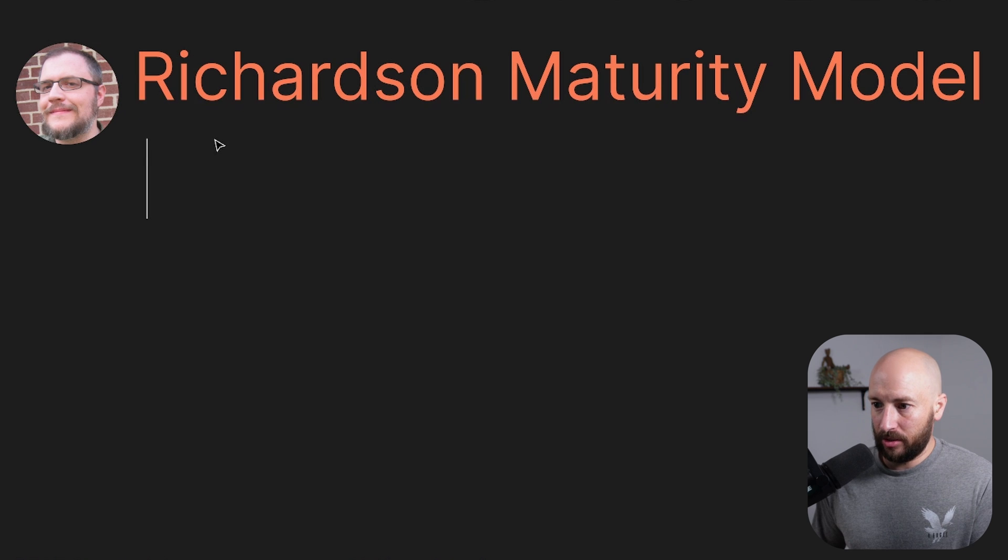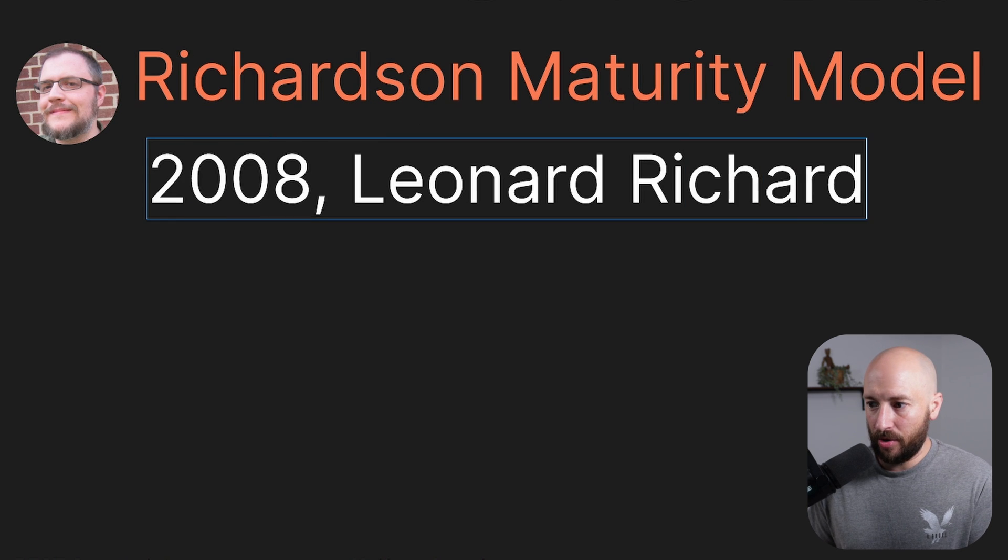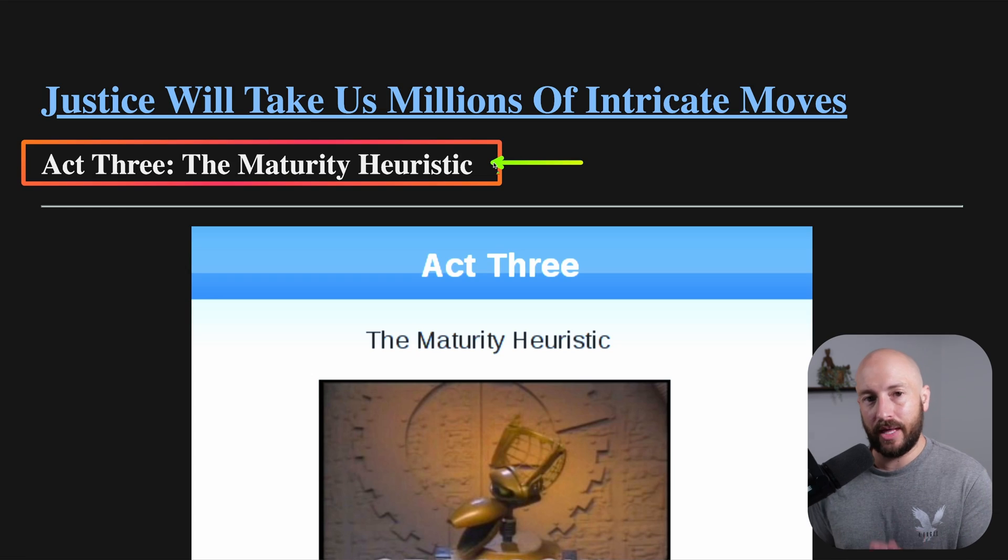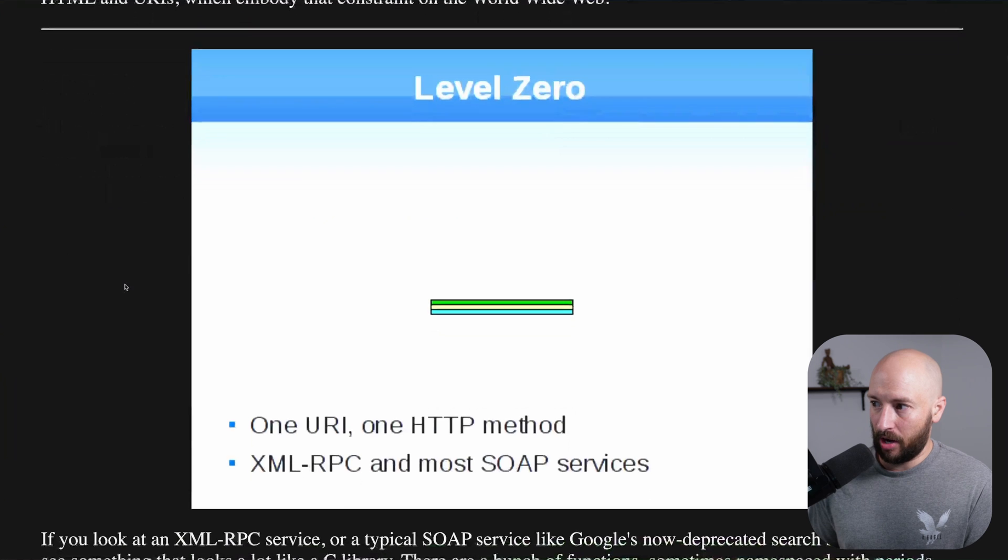The Maturity Model was suggested in 2008 by Leonard Richardson, and what he presents is these three levels of maturity for a REST API, and the way it looks is the following.